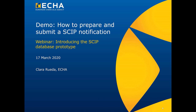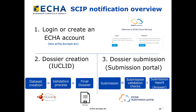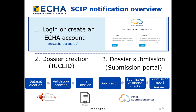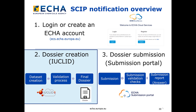Thank you and hello everyone. My name is Clara. In the next minutes, I'm going to give you a demo of how to prepare and submit a SCIP notification. The demo will be focused on the preparation of a notification in the IUCLID cloud and the submission in the submission portal. In order to use the IUCLID cloud and the submission portal, you need to have an ECHA account and subscribe to the ECHA cloud services. If you don't have an ECHA account yet, you need to create it first. Please watch our tutorial on how to create an ECHA account or follow the instructions on the ECHA account manual.